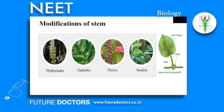Cladodes are green, photosynthetic stems, generally one internode long. These develop by modification of stem branches of limited growth. The true leaves of the plant are reduced to scales or spines. Example: Ruscus and Asparagus. Bulbils are modified vegetative or floral buds arising in the axil of scale or foliage leaves. They help in vegetative propagation. Examples: Lilium, Agave, Oxalis, etc.